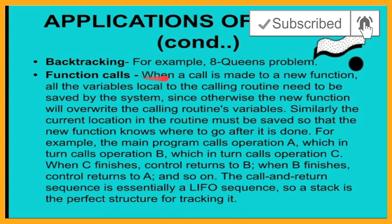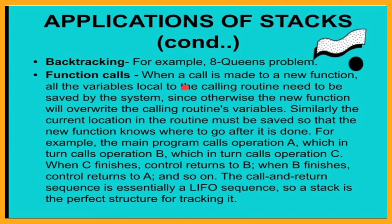Next one is backtracking. Backtracking is a main concept. The 8 queens problem — if you read the question, it is a normal chess board, 8x8. The chess board will have eight queens, and one of the eight queens will be placed in each row.